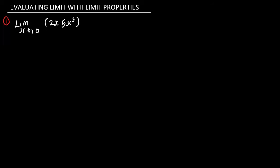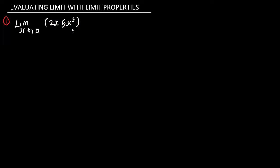Now let's take a look at this example. We are going to use limit properties to evaluate the limit as s approaches 10 of the function 2s multiplied by 5s cubed. We are going to use the product rule. Using the product rule, this is going to be the limit as s approaches 10 of the first function 2s, multiplied by the limit as s approaches 10 of the second function 5s cubed, because we are having multiplication of two functions.